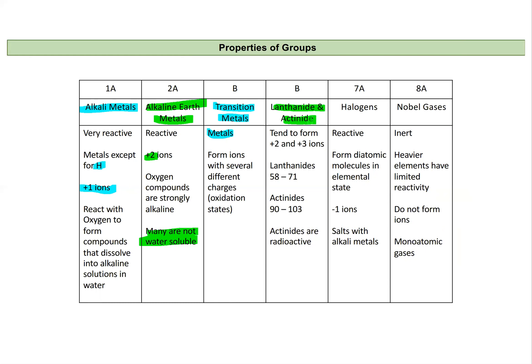Our lanthanides and actinides are the ones that are subset down below our periodic table. They tend to form plus two and plus three ions, and the actinides are radioactive.